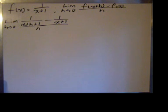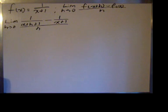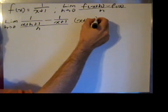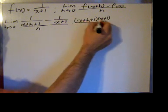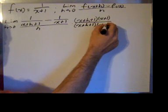In order to continue this process, I need to make a simple fraction, and to do that I am going to multiply by 1 in the form of the common denominator of the numerator of the compound fraction over the same thing. In this case, the common denominator of the numerator is just the product of the denominators, so that would be x plus h plus 1 times x plus 1, divided by x plus h plus 1 times x plus 1.